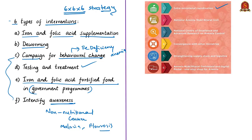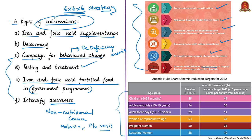The six institutional mechanisms are: intra-ministerial coordination; a National Anemia Mukt Bharat Unit; a National Centre of Excellence and Advanced Research on Anemia Control; convergence with other ministries; strengthening supply chain and logistics for anemia reduction programs; and an Anemia Mukt Bharat dashboard and digital portal. The six target groups are: children aged 6–59 months, adolescent girls 15–19 years, adolescent boys 15–19 years, women of reproductive age, pregnant women and lactating women.